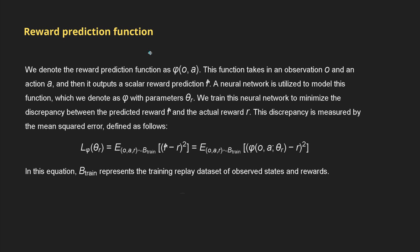Let's talk about the reward prediction function. We denote it as φ, which takes an observation o and an action a and outputs a scalar reward prediction r̂. A neural network models this function, denoted φ with parameters θ, trained to minimize the discrepancy between the predicted reward r̂ and the actual reward r, measured by the mean squared error.